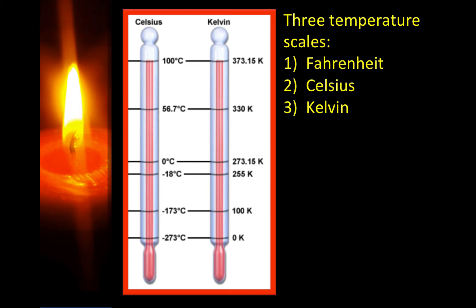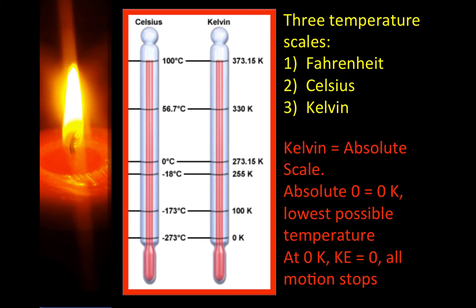Let's consider the three temperature scales: Fahrenheit, Celsius, and Kelvin. In chemistry we'll be looking at Celsius and Kelvin. The Kelvin scale is also known as the absolute scale. Absolute zero, or zero Kelvin, is the lowest possible temperature — at zero Kelvin, kinetic energy equals zero and all motion stops. Notice that Kelvin does not have a degree sign; we would just say 100 Kelvin.